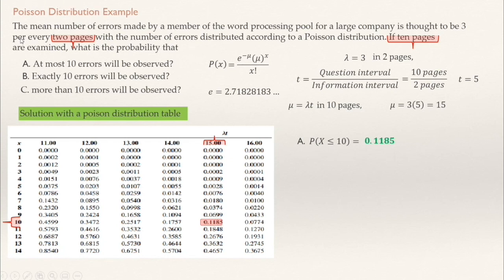Remember, at most can be expressed in different ways in English. You can say no more than 10, or at most 10, or another equivalent phrasing — you need to recognize them all as the same cumulative probability.